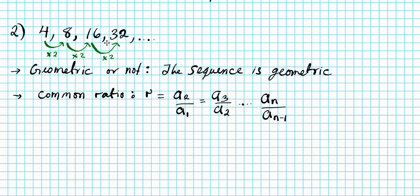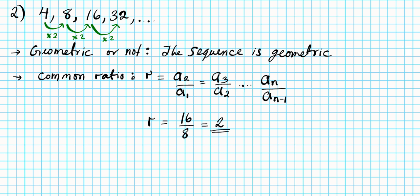So we can pick any term as long as it's not the first term and divide it by the term before it. So how about we pick terms 3 and 2 for this example. So 16 divided by 8, what is your answer? 2. That's your common ratio.